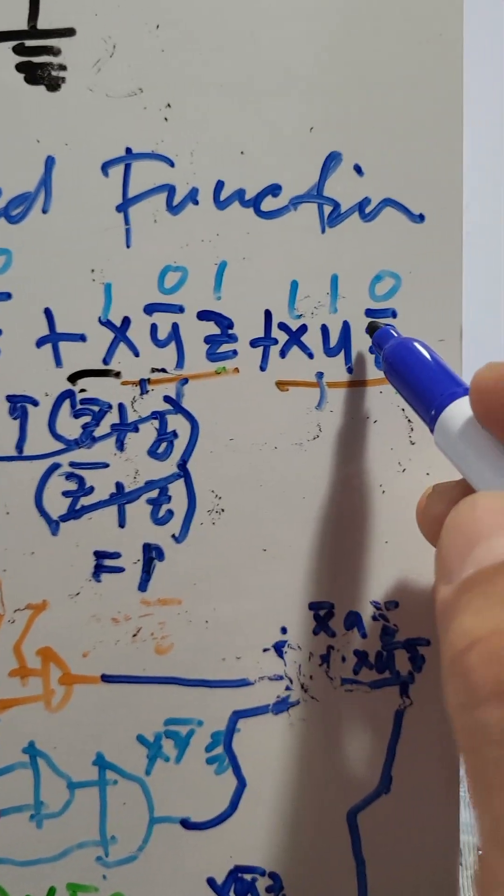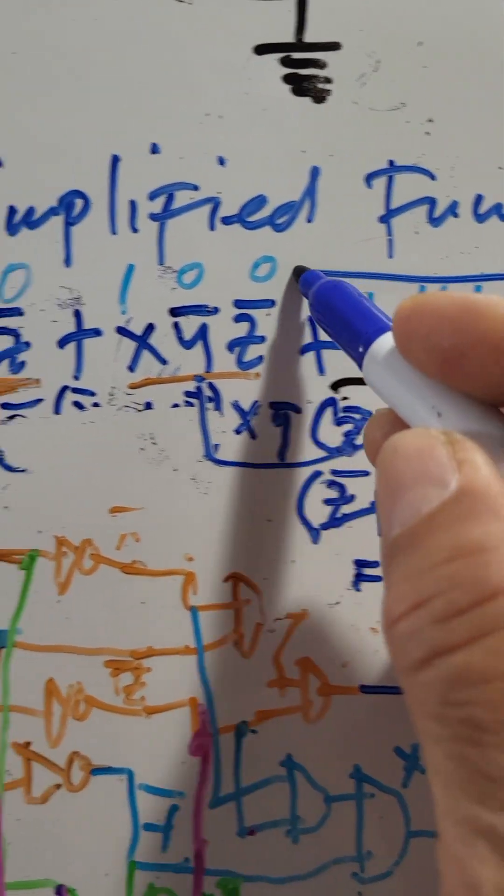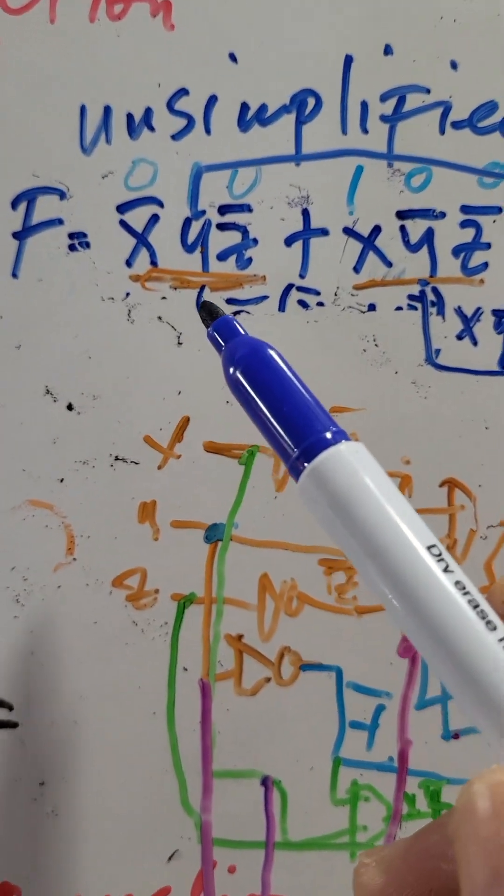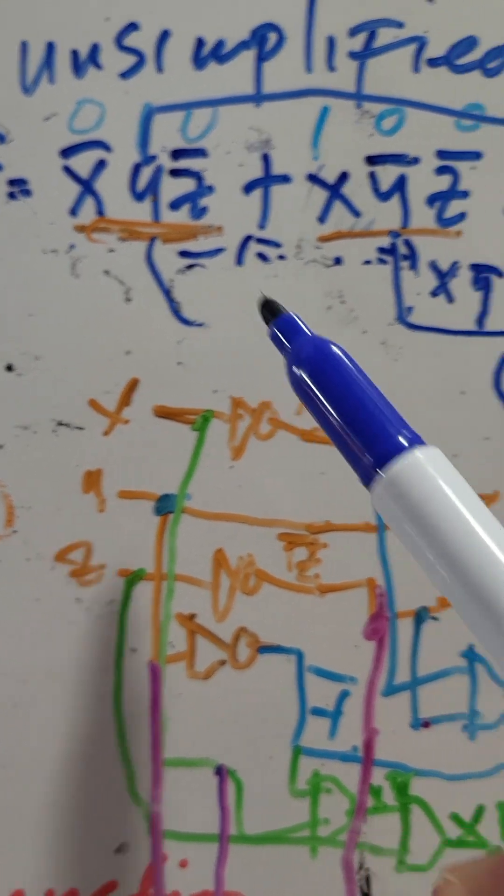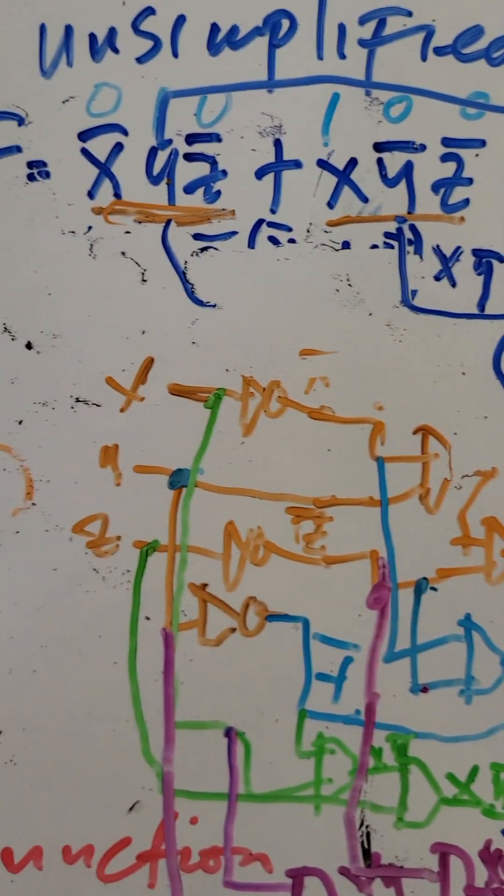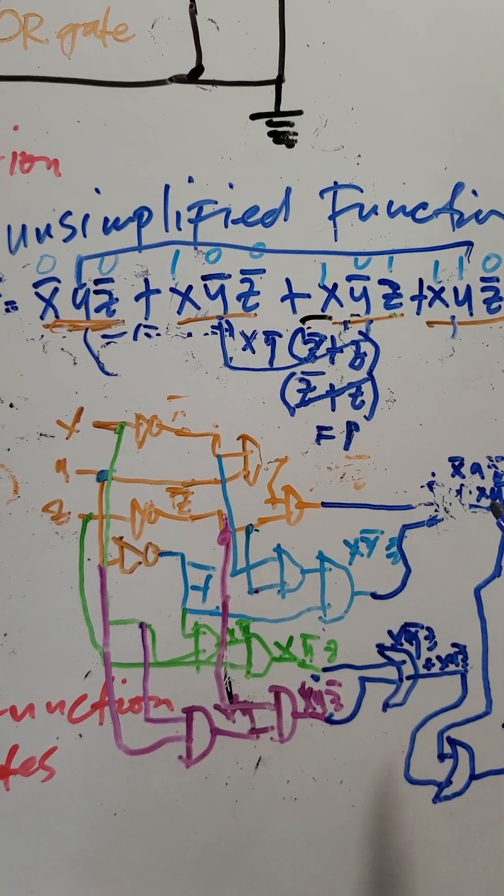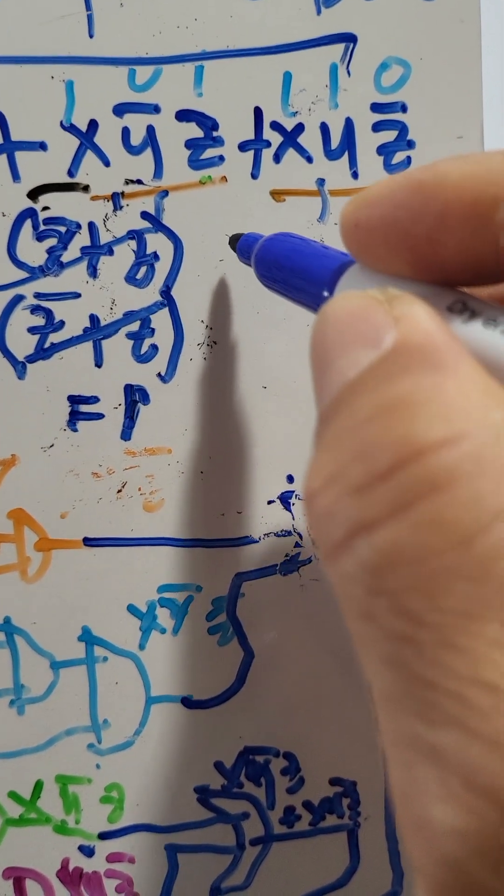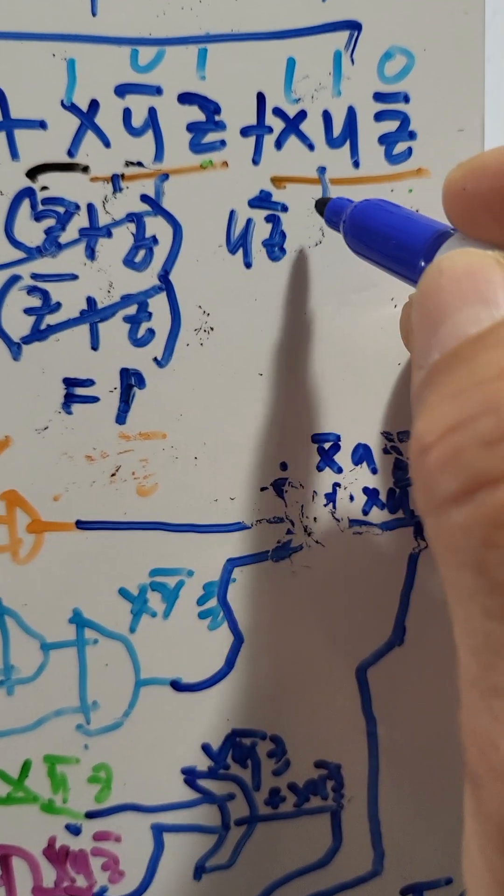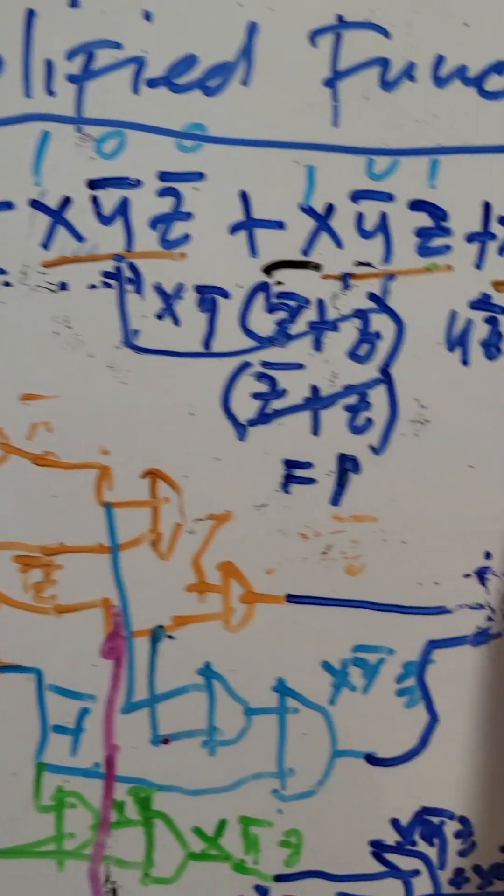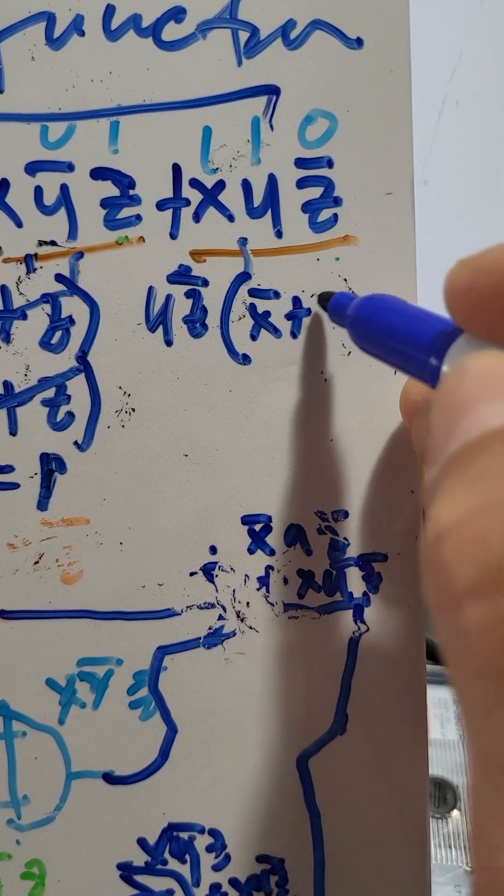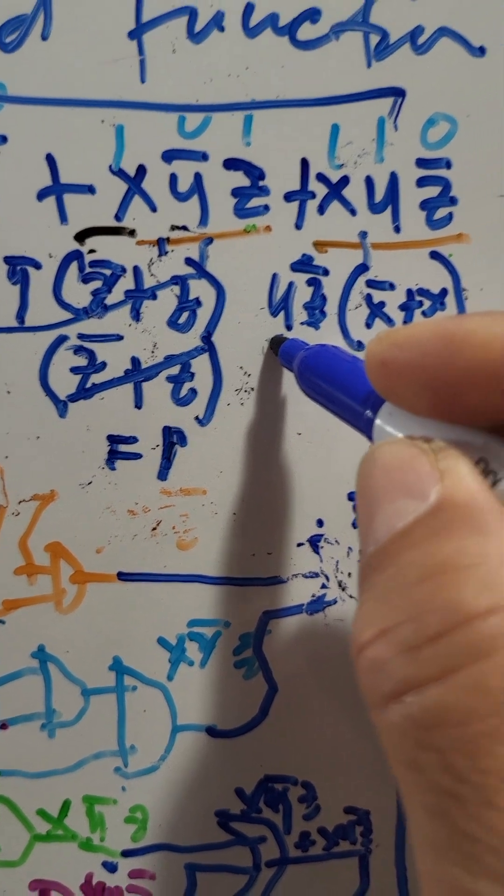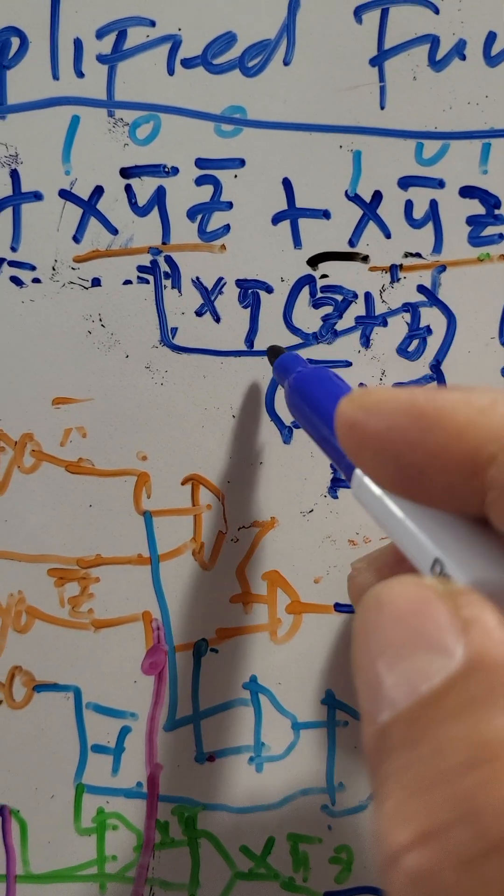Then, same also. We pair this last term to this first term here. Then, what is the common? X bar Y Z bar and X Y Z bar. The common is Y Z bar. So, Y Z bar. And what is remaining is X bar and here is X, plus X. So, again, this will be equal to 1. So, the remaining is Y Z bar and here is X Y bar.